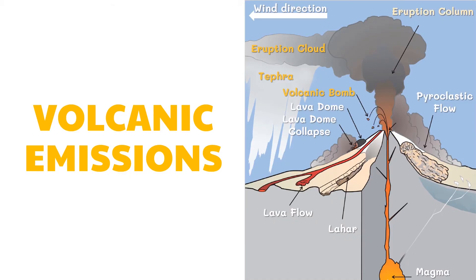An eruption column consists of clouds of heated ash and tephra released from a vent during an explosive volcanic eruption. A pyroclastic flow contains fast-moving volcanic matter and hot gas that moves away from a volcano and incorporates tephra. When hot volcanic material mixes with water from streams, snow, or ice, lahar mud flows form. Magma that erupts is called lava, and lava flows are molten rock that ooze to the earth's surface after a volcanic eruption.